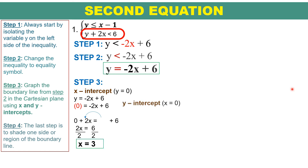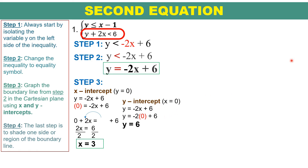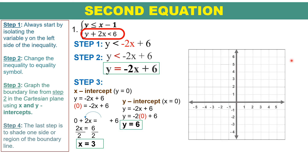For the y-intercept, change x into 0 using the same equation y equals negative 2x plus 6. Remove x and cancel the negative 2x term. We have y equals 6, so the y-intercept is equal to positive 6.